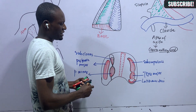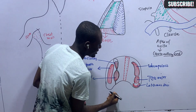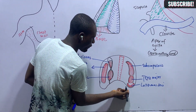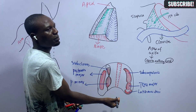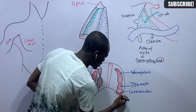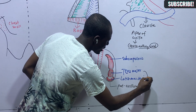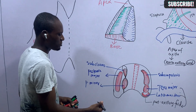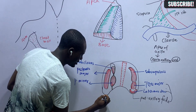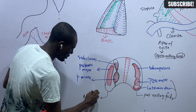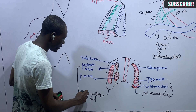It is important to note that the teres major and the latissimus dorsi twist around themselves and form what is called the posterior axillary fold. The base of the axilla is curved, giving it two folds. The fold along the posterior axillary line is called the posterior axillary fold, formed by the teres major twisting around the latissimus dorsi. Anteriorly, the fold is called the anterior axillary fold, and it is formed by the pectoralis major muscle.